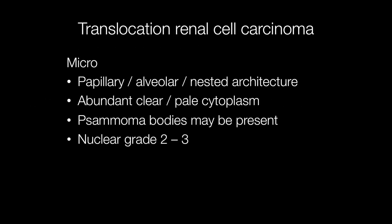Histologically, translocation renal cell carcinomas have a fairly distinctive appearance, with a papillary, alveolar, or nested architecture. The cytoplasm is generally abundant and clear or pale. Psammoma bodies may be present, and the nuclear grade is 2 to 3.